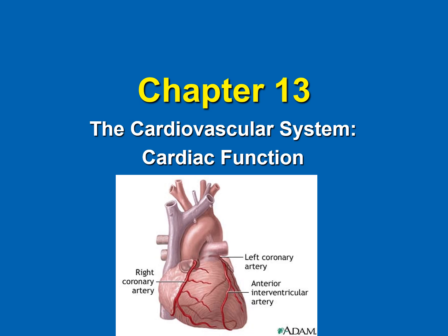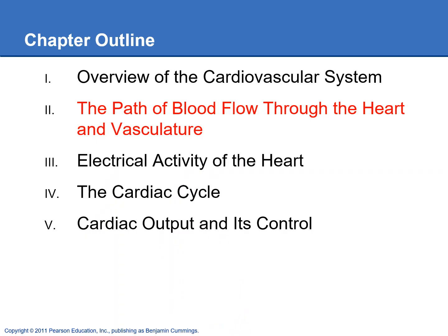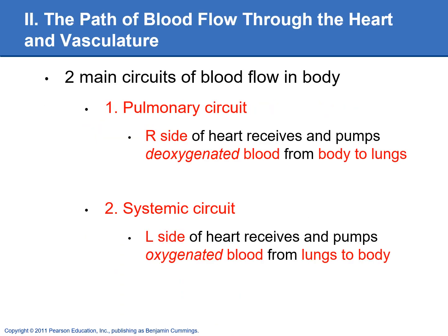We're going to continue on in chapter 13 with the path of the blood flow through the heart. There are two main circuits of blood flow through the body: the pulmonary circuit and the systemic circuit. Make sure you star these — they're really important. The pulmonary circuit pumps blood from the right side of the heart to the lungs and back to the left side. The systemic circuit pumps blood from the left side of the heart out to the body and then back to the right side.